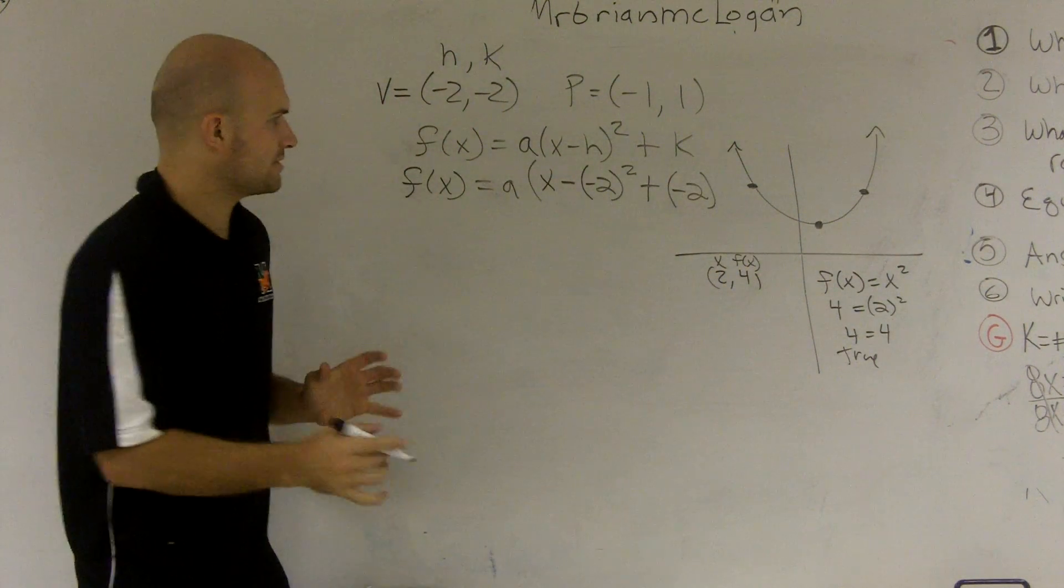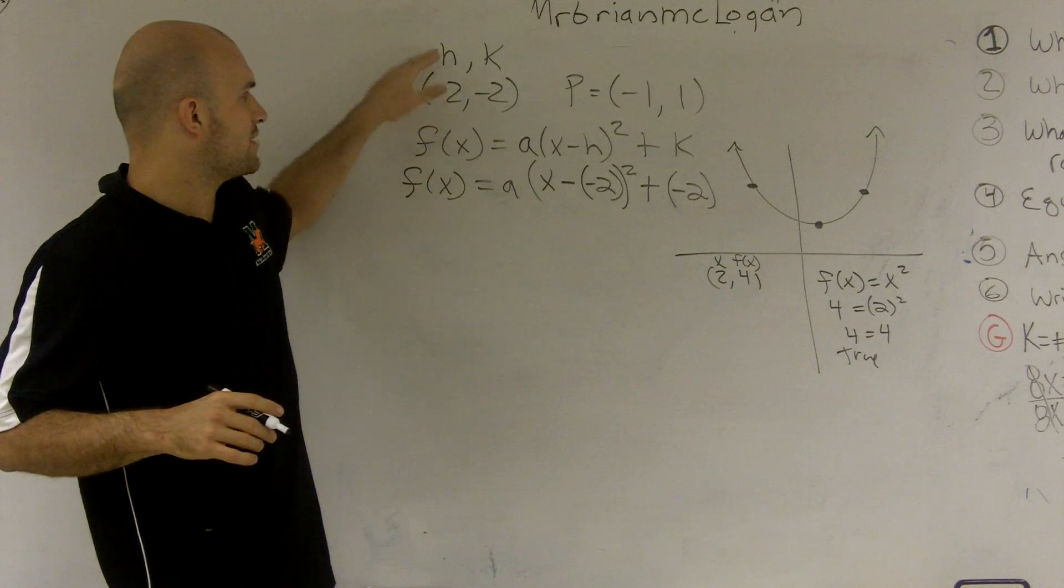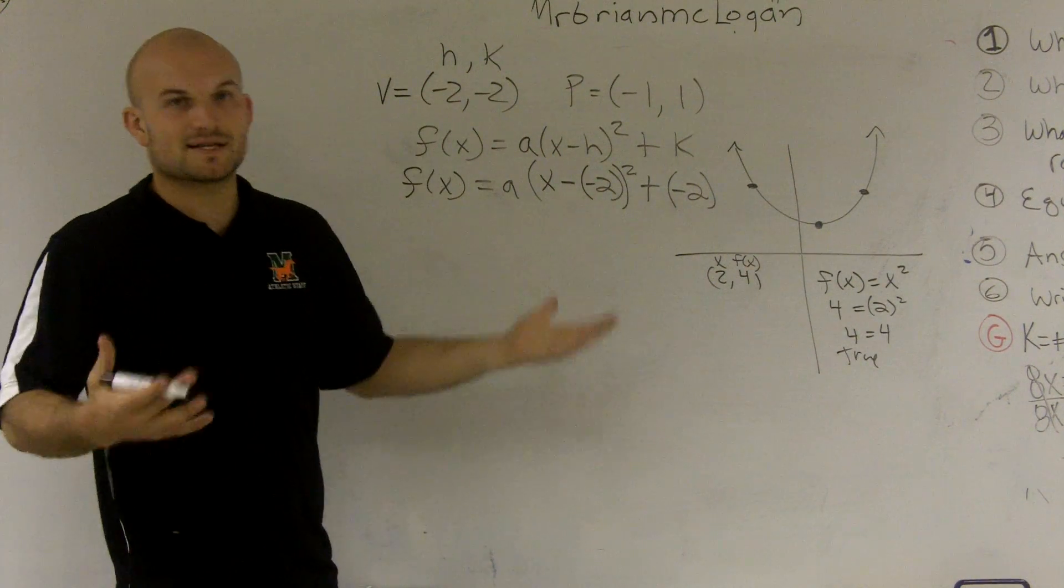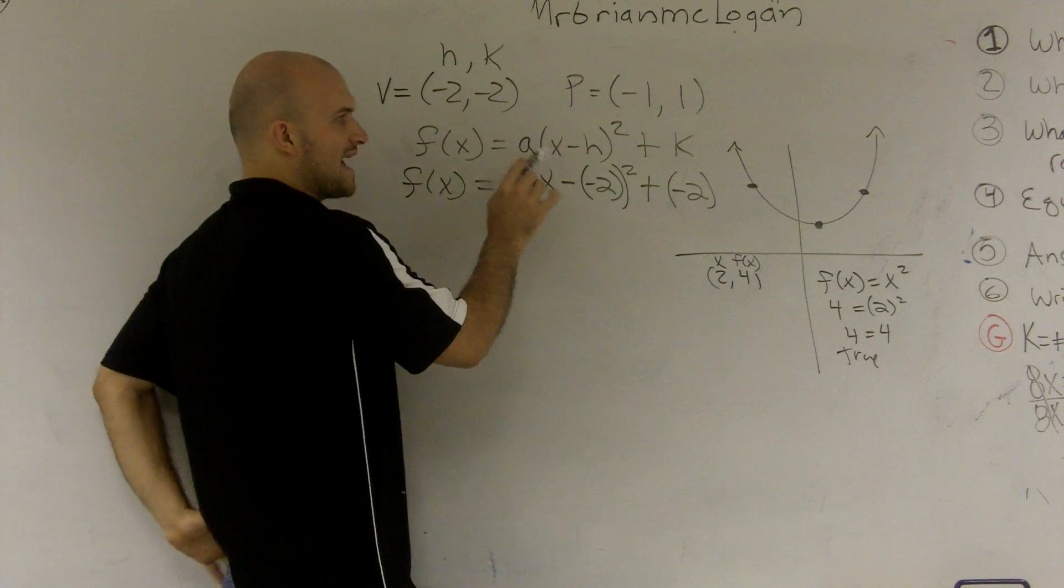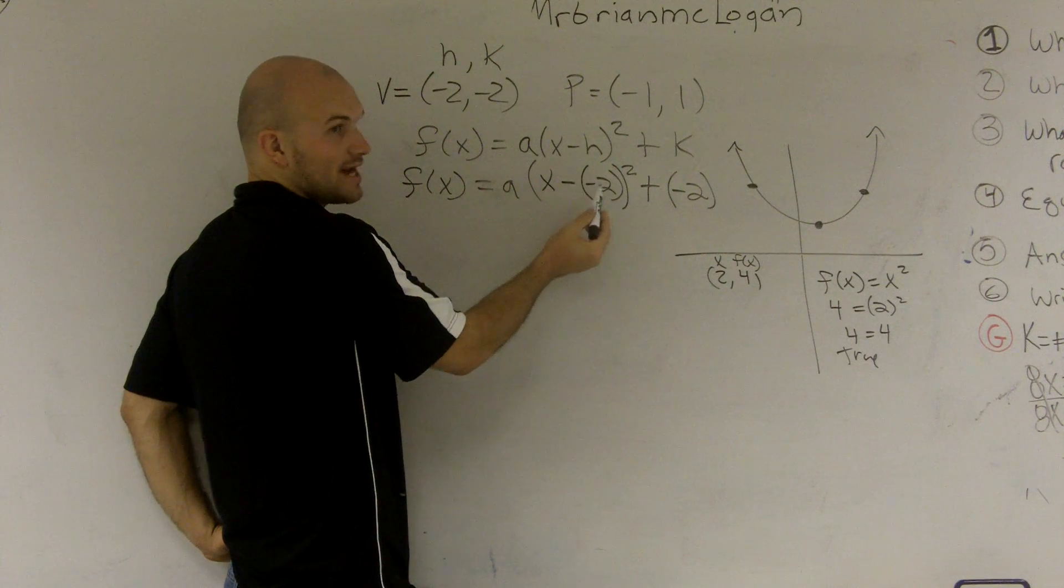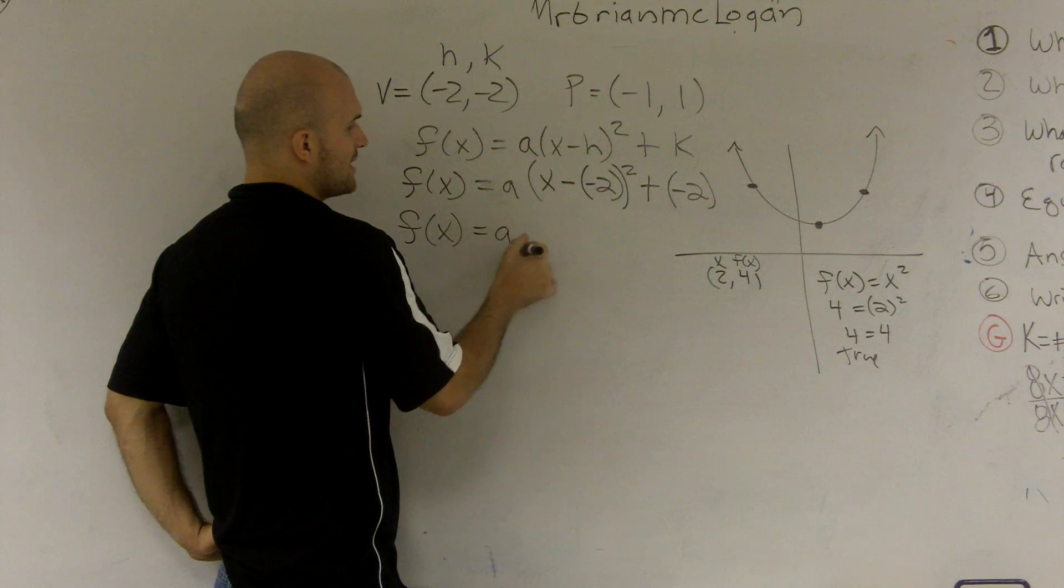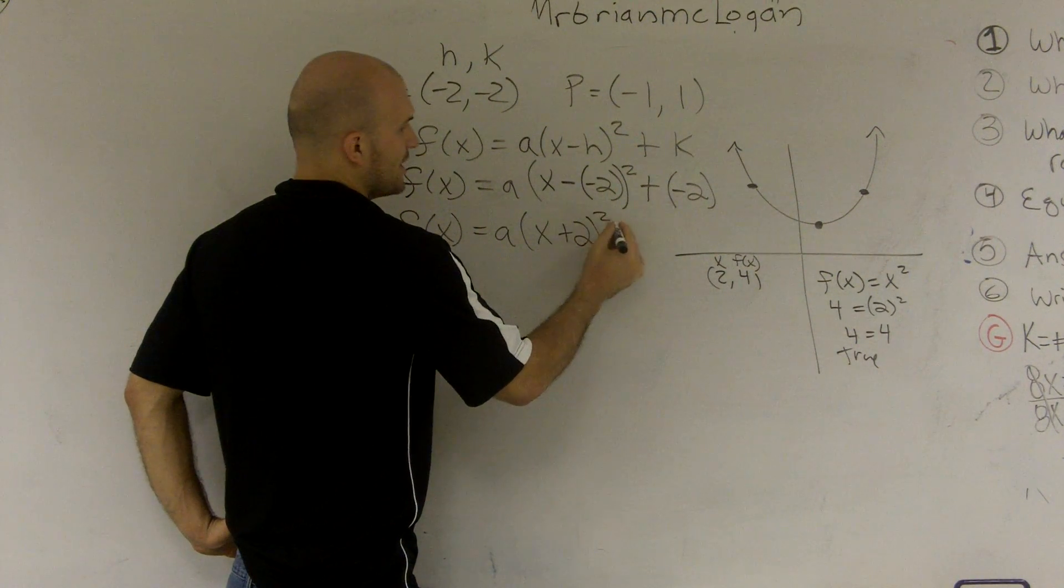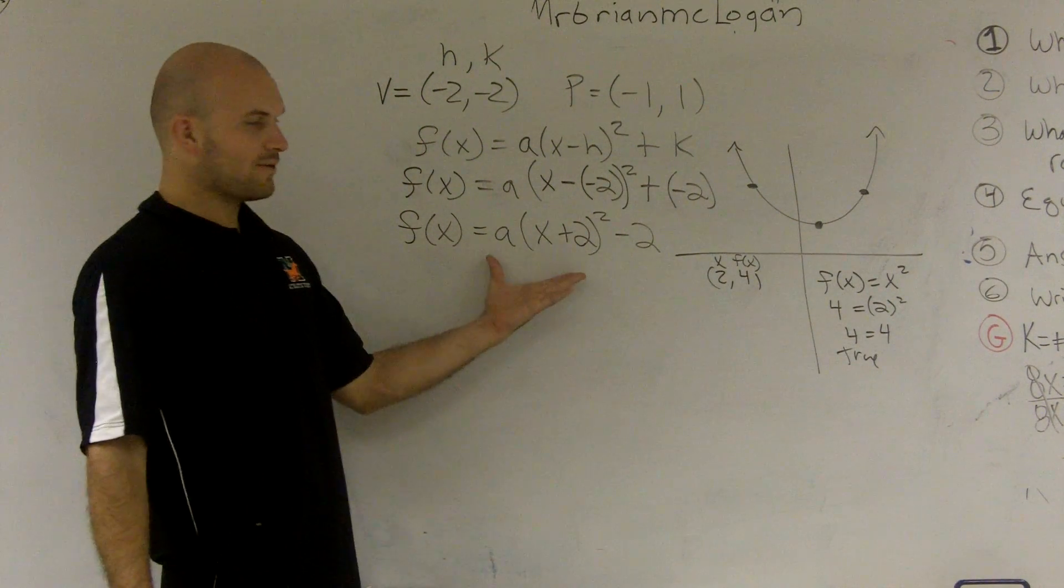And the reason why I want to show you to put things in parentheses is because so many students say, oh, that's a negative h, or that's a negative 2, so it's x minus 2, right? It makes sense. That's a negative 2, x minus 2, or x minus h, it makes sense. However, the formula says x minus h. Your h is a negative 2. So in reality, these two are actually going to cancel out to give you a positive, right? So actually, I'm going to have x plus 2 squared minus 2. So that's so far what I have. That's me including the vertex, where the vertex h is negative 2, and my k is negative 2.